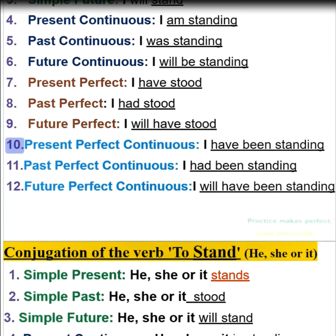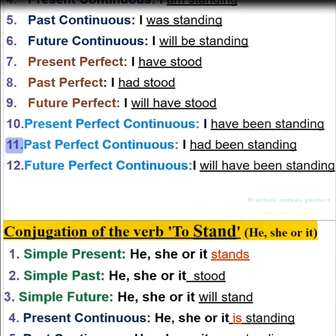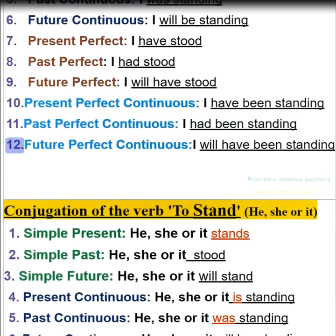10. Present perfect continuous — I have been standing. 11. Past perfect continuous — I had been standing. 12. Future perfect continuous — I will have been standing.